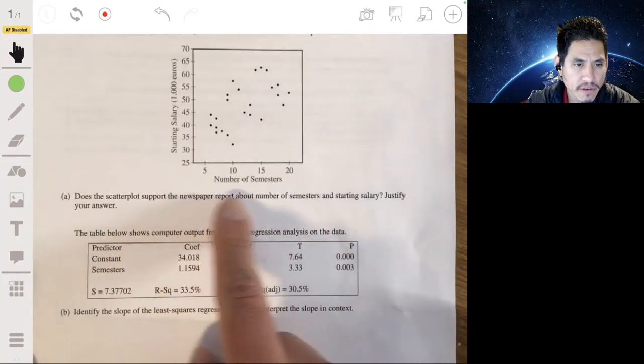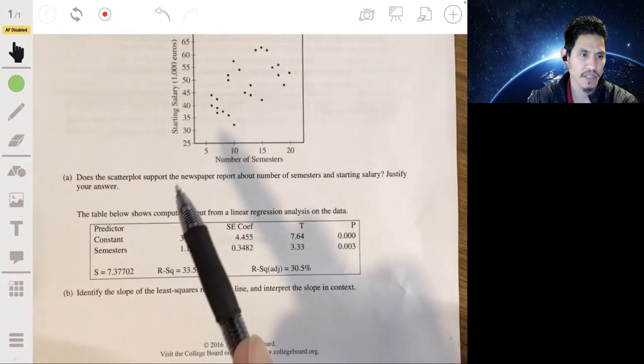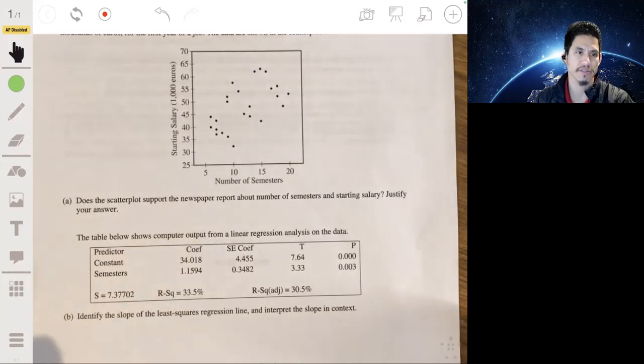The data are shown in the scatterplot below. Okay, so number of semesters across, starting salary vertically. So does the scatterplot support the newspaper report about the number of semesters and starting salary? Justify your answer.